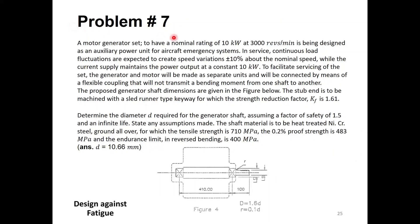This is problem number seven, the last problem in this design based on fatigue tutorial. A motor-generator set has a nominal rating of 10 kilowatt at 3,000 RPM and is being designed as an auxiliary power unit for an aircraft emergency system. The nominal power is 10 kilowatts and the nominal speed is 3,000 RPM.